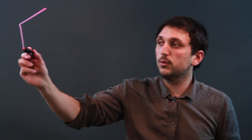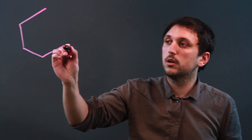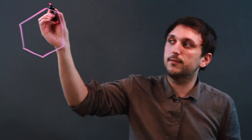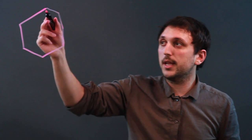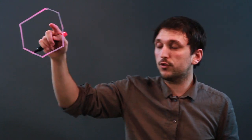Basically, a heptagon is a seven-sided polygon and is a closed shape. So, one, two, three, four, five, six, seven. Now, this is not a regular heptagon, but it is a seven-sided closed shape.